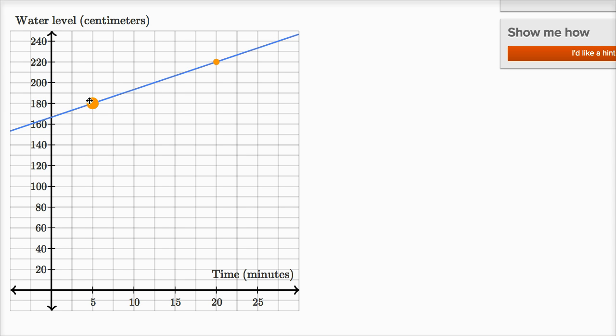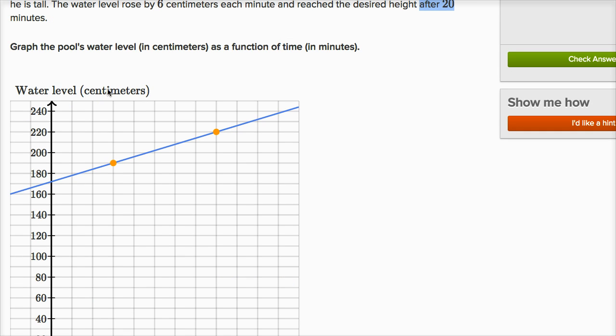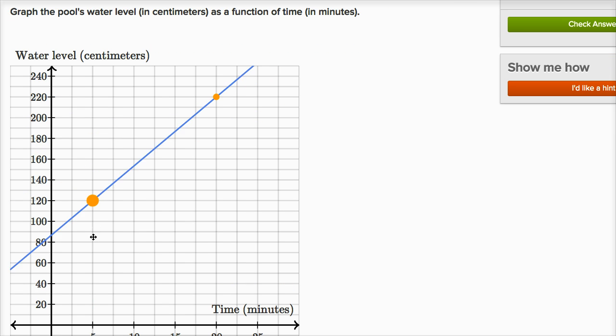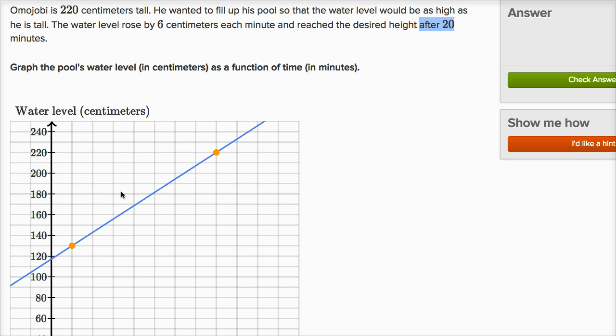Now the other question is, where would we put this point? We need another data point in order to define a line. You might be tempted to say, okay, maybe the water level was at zero to begin with. But they didn't tell us that. Maybe when he started filling the pool, there was already some water in there. So we have to be a little bit more careful. But they do give us some information.